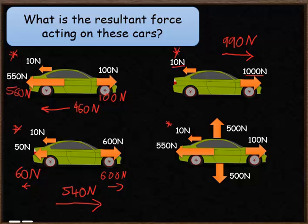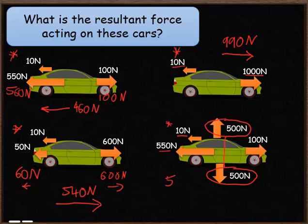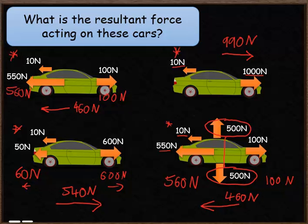The fourth question is slightly more complicated still. There's an upwards force and a downwards force. Because the upwards force of 500 newtons and the downwards force of 500 newtons are the same size, these two forces are balanced — there's no resultant force upwards or downwards, so we can ignore those. We then concentrate on the other forces: in the backwards direction we've got 550 newtons and 10 newtons, adding to 560 newtons backwards. We've got 100 newtons going forwards. 560 backwards is larger, telling us the direction. 560 take away 100 gives 460 newtons backwards.